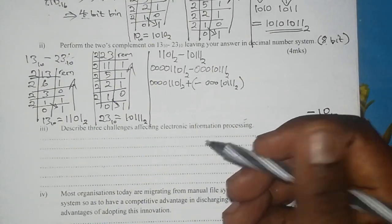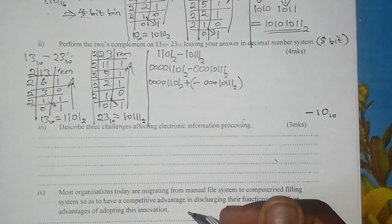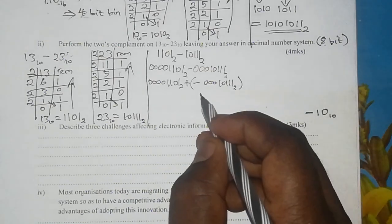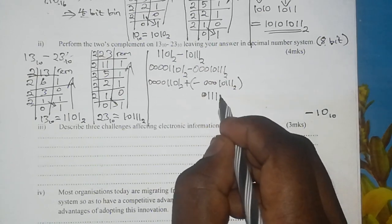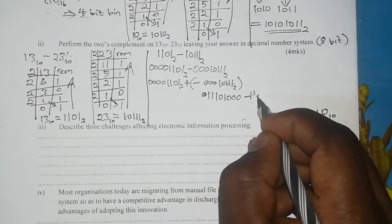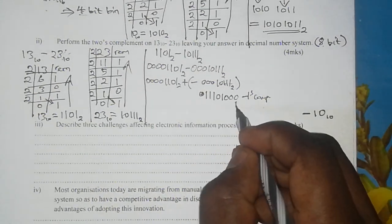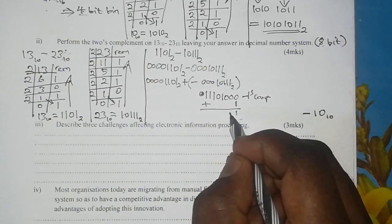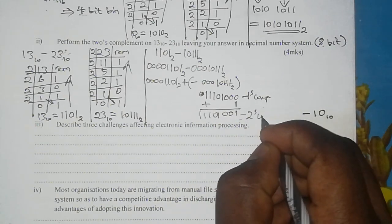To get the 2's complement, you first get the 1's complement and then add 1 to it. To get the 1's complement, you change 0's to 1's and 1's to 0's. Therefore 00010111 becomes 11101000. This is the 1's complement of that number. To get the 2's complement, we add 1 at the rightmost position, giving us 11101001. This is now our 2's complement.